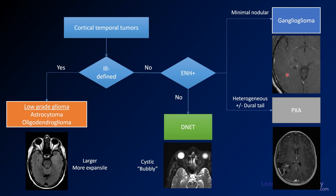This image from the same case is pretty typical for a ganglioglioma. If you want to see a DNET, go back and look at case 13 from this series. There's also a PXA in this series, so if you want to compare what those different tumors look like, you can check them out in the other cases.